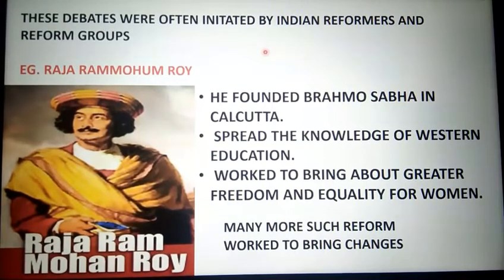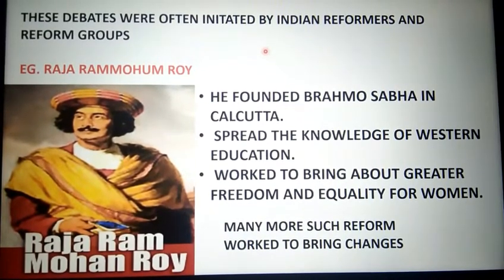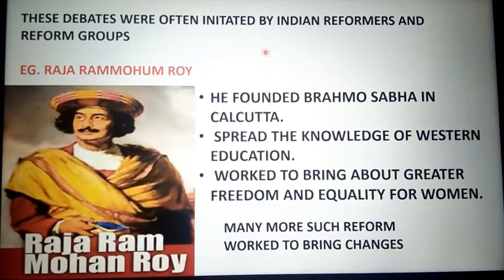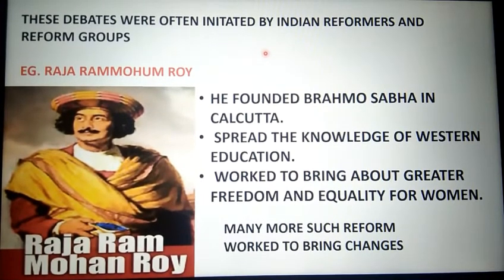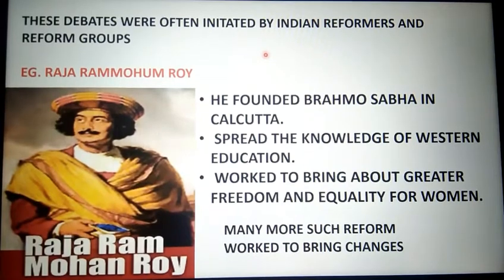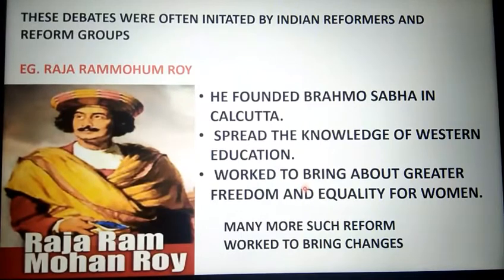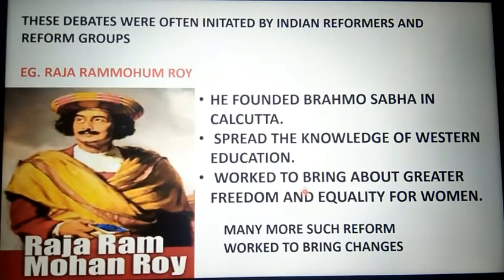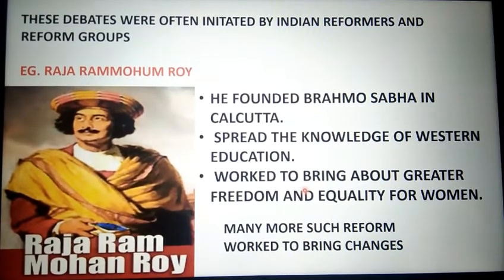One example of an Indian reformer is Raja Ram Mohan Roy. He founded the Brahmo Samaj in Calcutta — he is a very important personality from our history. Through Brahmo Samaj he wanted to spread the knowledge of western education. He worked to bring about greater freedom and equality for women. There were many more such reformers who worked to bring change in society.